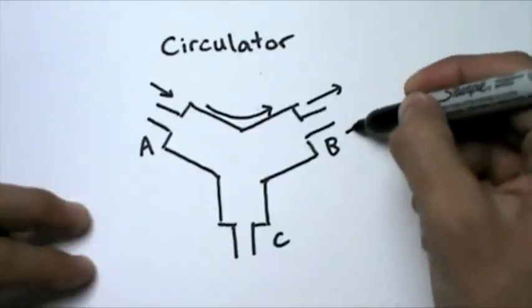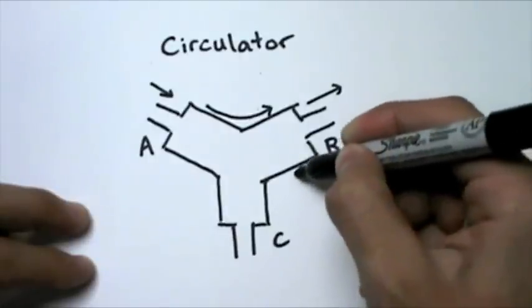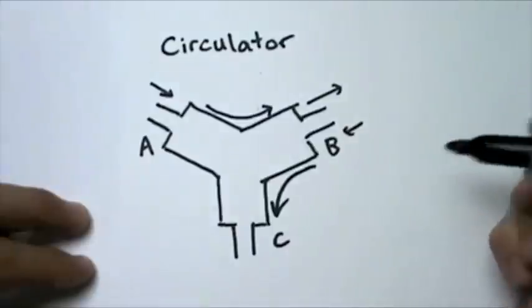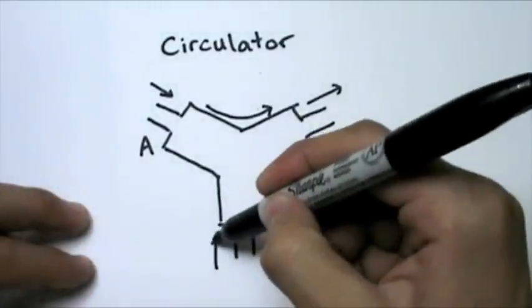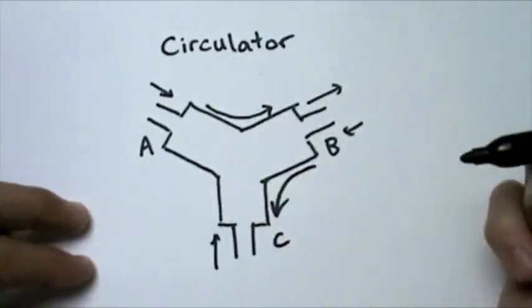Likewise, a signal being sent into B will be deflected the same way downward down to C. And then a signal coming into C will be deflected up into A.